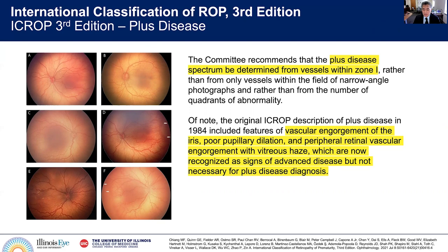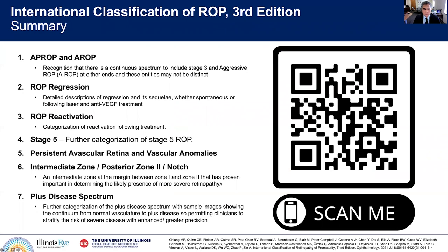Regarding plus disease, we've often described it as just plus or no plus, and then in 2005, pre-plus was added. Here we are acknowledging that it is a spectrum disease and that it's determined from the vessels within zone 1. There's also a discussion around vascular engorgement of the iris, poor pupillary dilation, poor peripheral retinal vascular engorgement, or vitreous haze — these are not necessarily needed for a plus disease diagnosis.